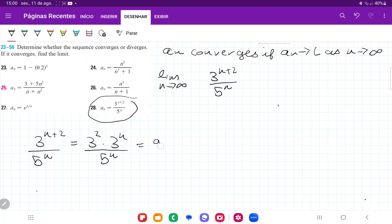And so this is equal to 9 times (3/5)^n. And so once I've algebraically changed this, this is equal to the limit as n approaches infinity of 9 times (3/5)^n.